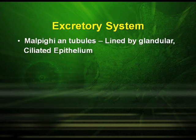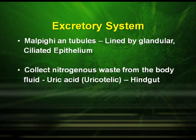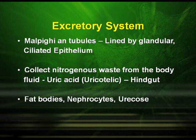The excretory system: their excretory organs are the malpighian tubules, which are lined by glandular ciliated epithelium. They collect the nitrogenous waste from the body, which is uric acid, and so they are known as uricotelic organisms, and then pass it to the hindgut. The fat bodies, nephrocytes and uricase glands are also involved in the process of excretion.